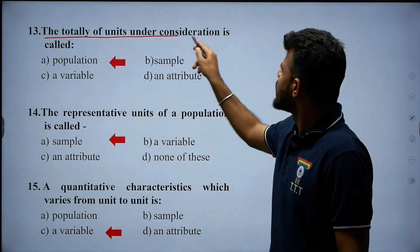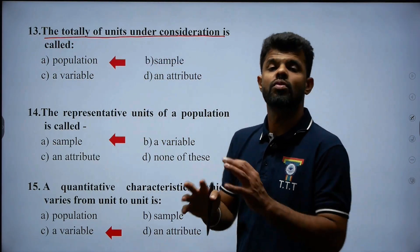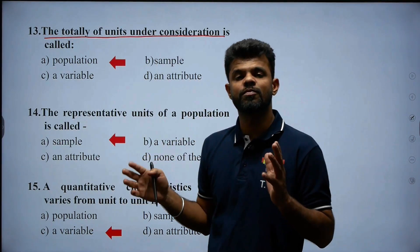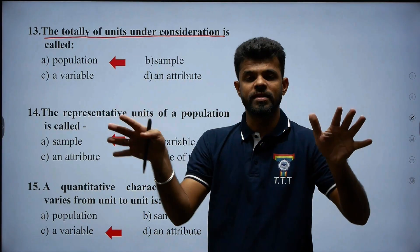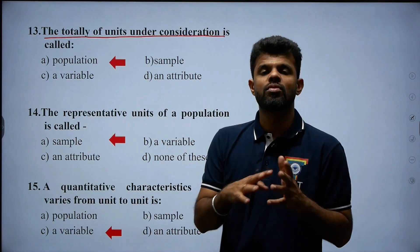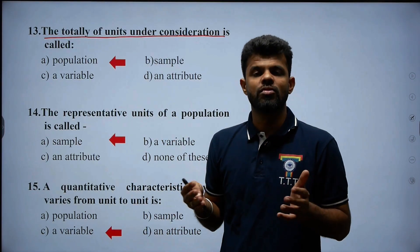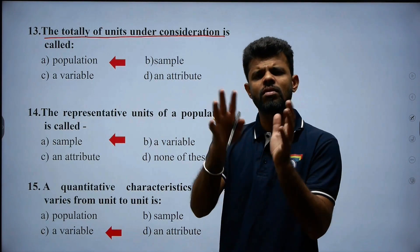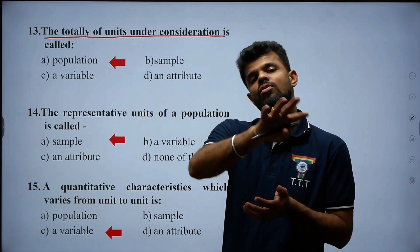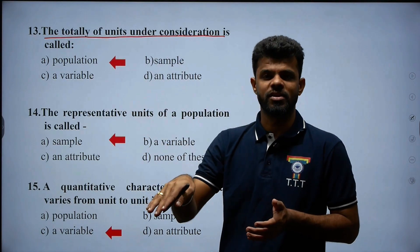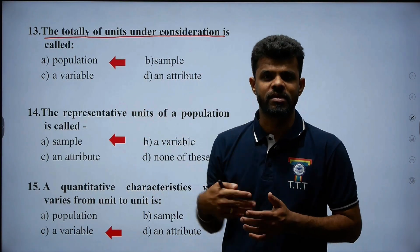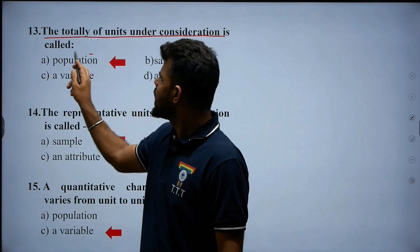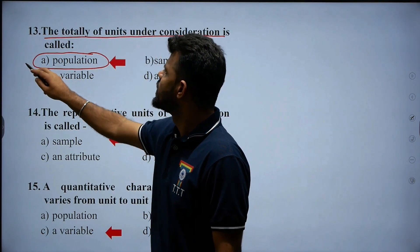Question number thirteen: the totality of units under consideration is called population. For example, total number of students in a class, total number of passengers in a bus, total number of leaves in a tree, total number of patients in a hospital — all these are called population. Therefore, option A — population — is the right answer.